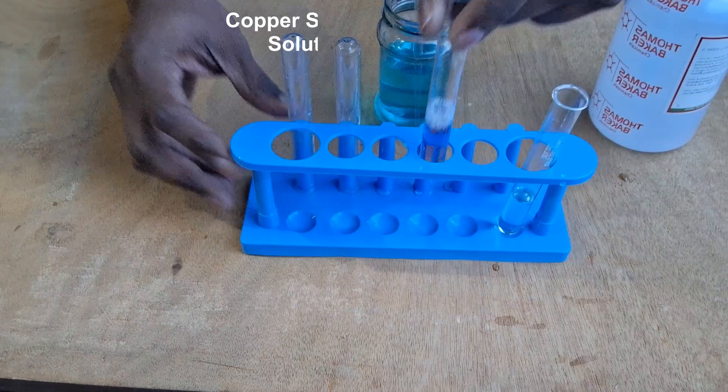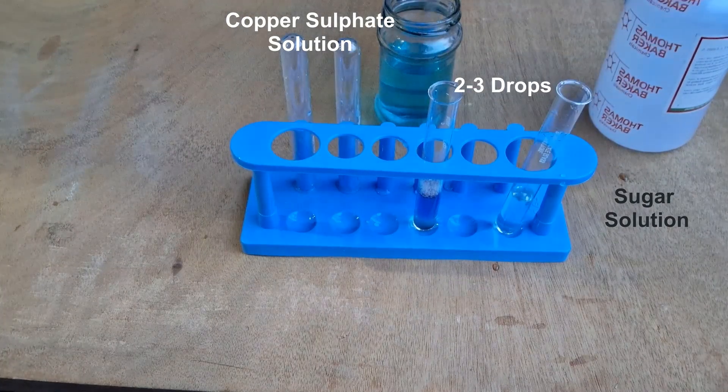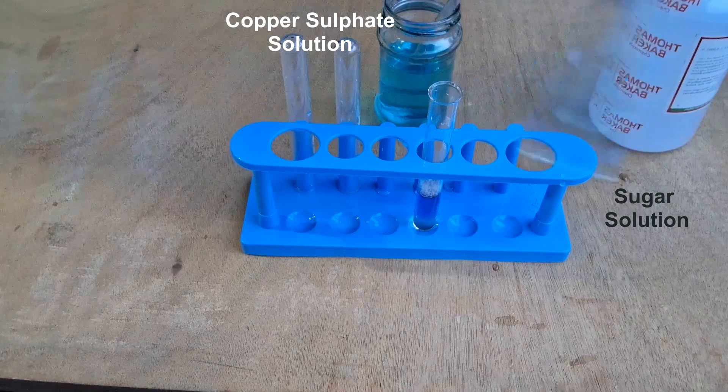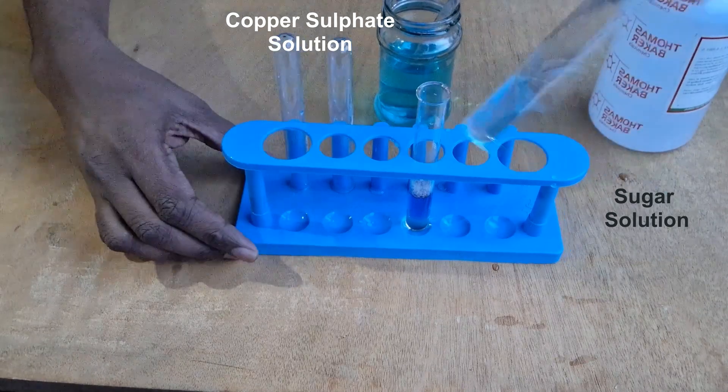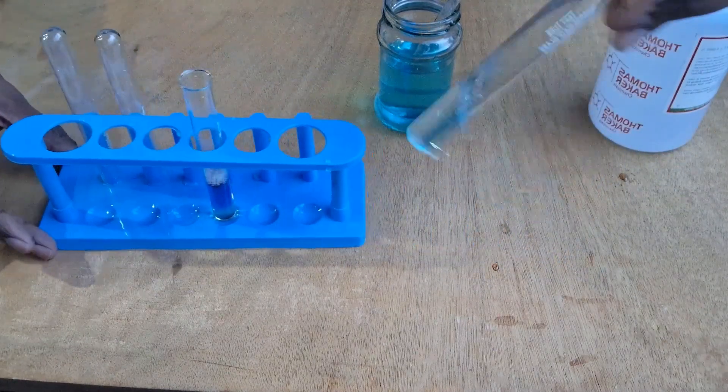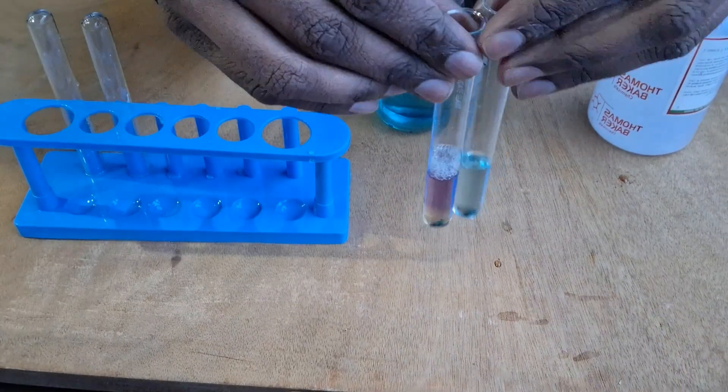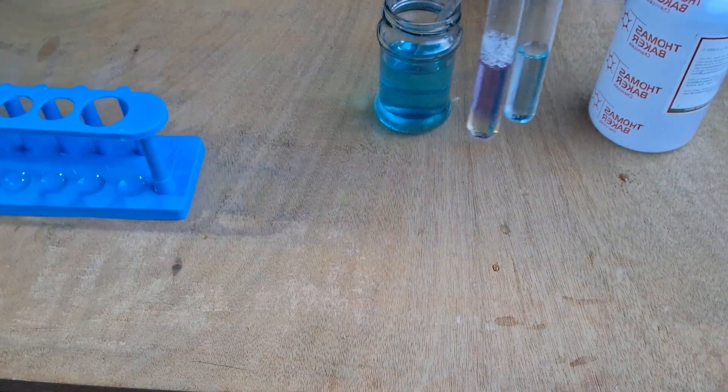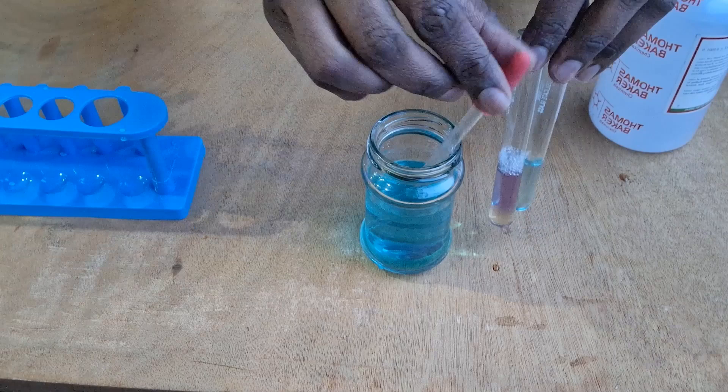Let's try the same thing with sugar solution. We'll take two or three drops of copper sulfate solution and then shake this test tube about. You'll notice that in this scenario there's no change in color.